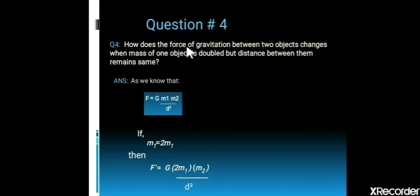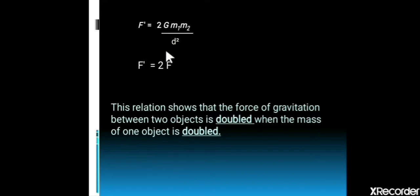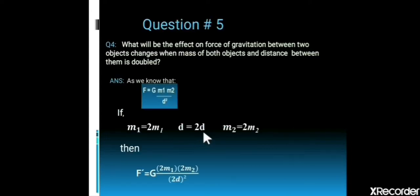Question 4: How does the force of gravitation between two objects change when the mass of one object is doubled but the distance between them remains the same? The gravitational force between mass m1 and m2 at distance d is F. If the mass of one object is doubled, we set m1 = 2m1. The new force F′ = 2 × G × m1 × m2 / d² = 2F. This shows the force of gravitation between two objects is doubled when the mass of one object is doubled.